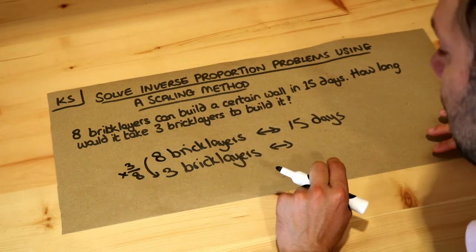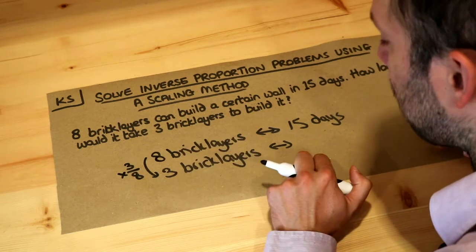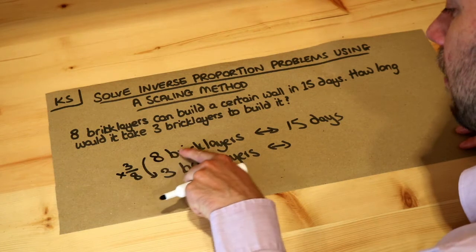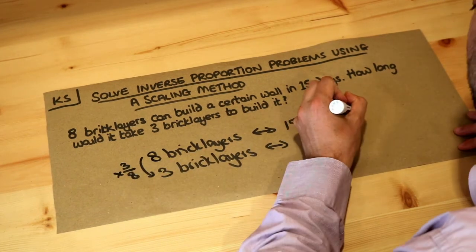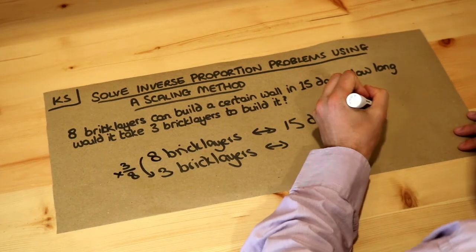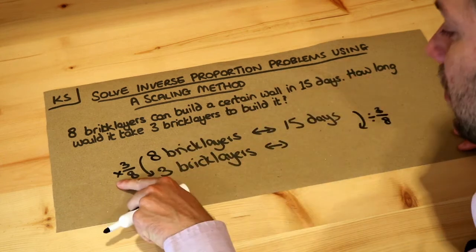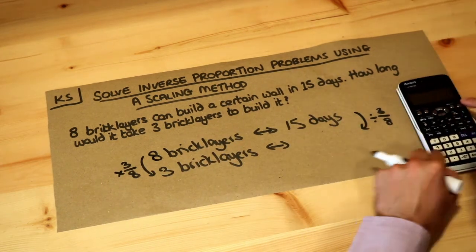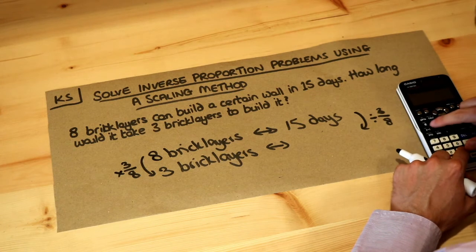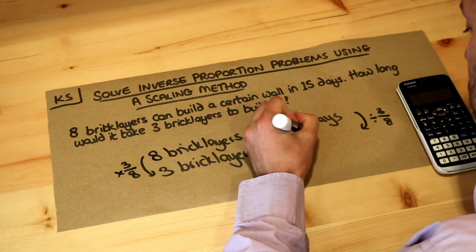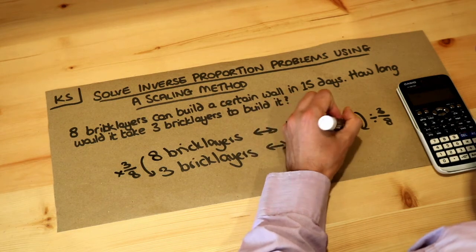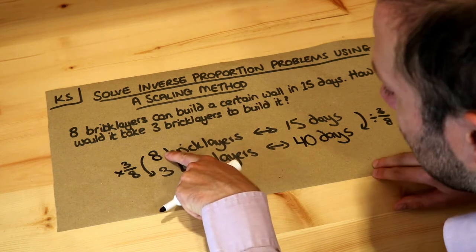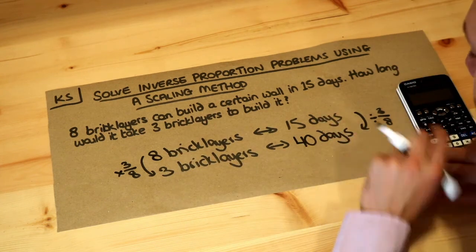Because these are inversely proportional — if you doubled the amount of bricklayers you would halve the time — if the bricklayers are multiplied by three-eighths, we divide the time by three-eighths. So if we times one value by something, we divide the other by that same value. We just need to do 15 divided by three-eighths, and that gives you 40 days — that's the final answer. So if your things are inversely proportional, whatever you multiply one by, you need to divide the other by.